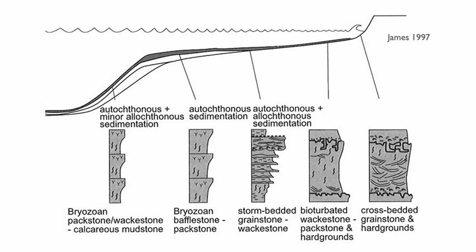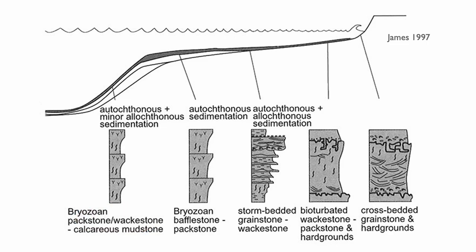Bed form in this type of setting is very useful for recognizing the different system tracts, and those system tracts look different depending on whether you are in the more distal or more proximal part of the system. In the distal part you'll find bryozoan packstone, wackestone, even mudstone. If you're very proximal, you'll end up with more cross-bedded grainstone, some hardground where there is no deposition, bioturbated packstone, and storm deposits.